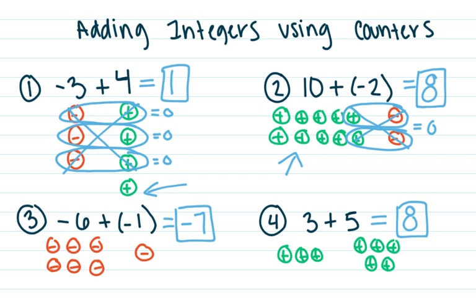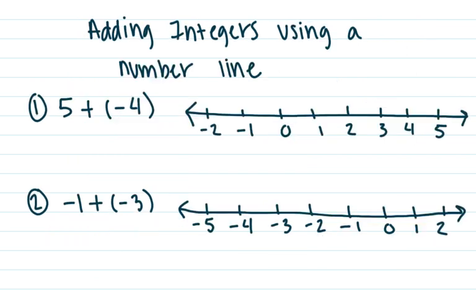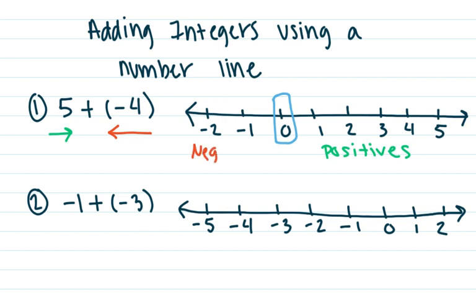That was an example using a modeling structure called counters. Now let's take a look at doing our problems with number lines. Number lines are another nice method to figure out these answers. One thing you have to remember is that positives are always trying to travel to the right, and negatives are always trying to travel to the left — they're trying to get back to their side of the number line. Positives always live on the right side of zero, and negatives are always on the left.